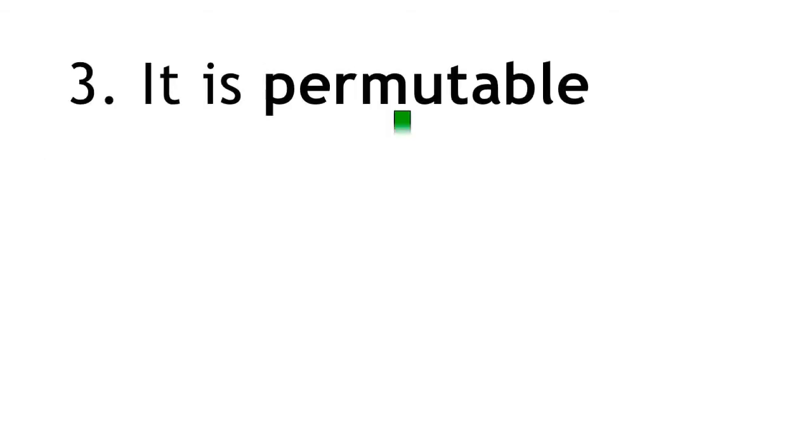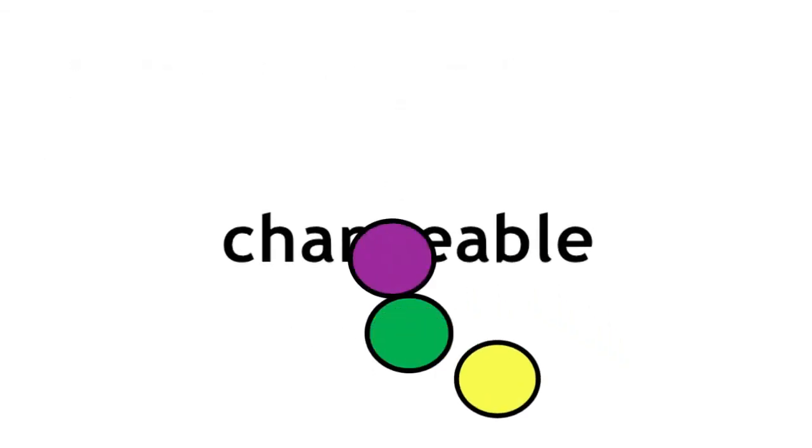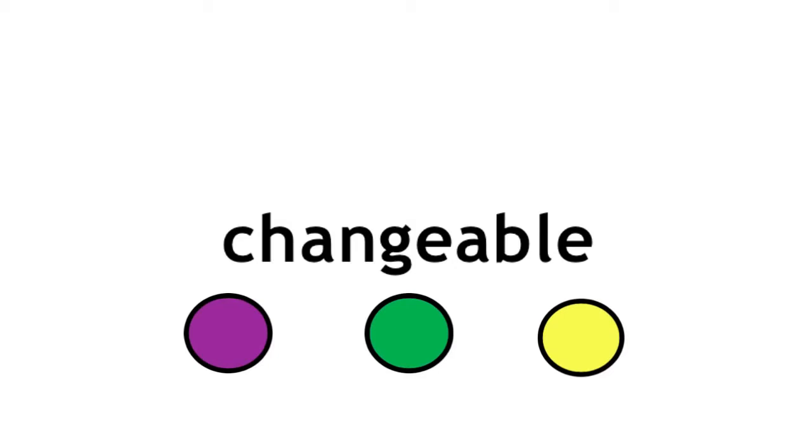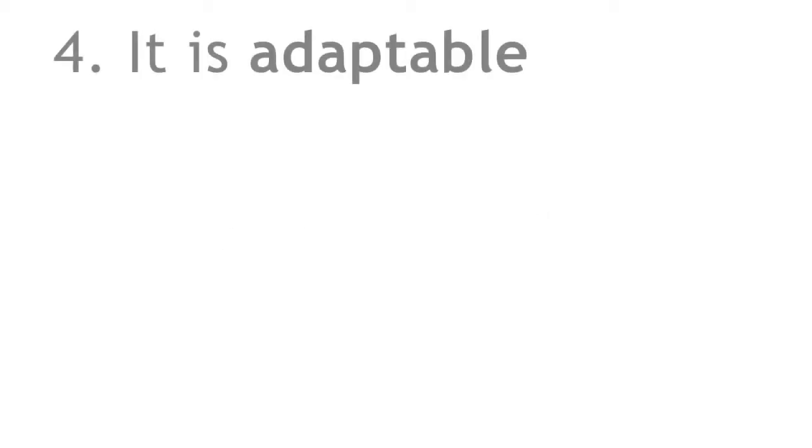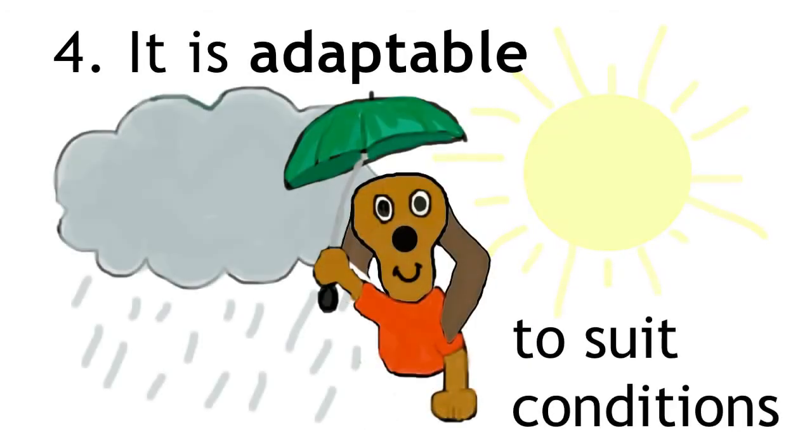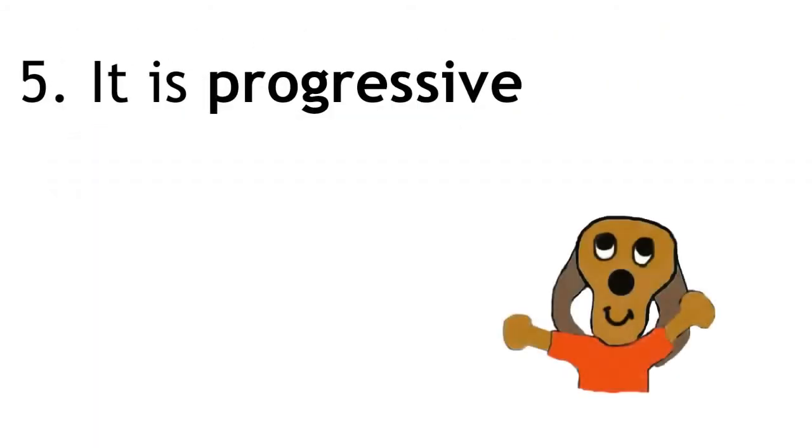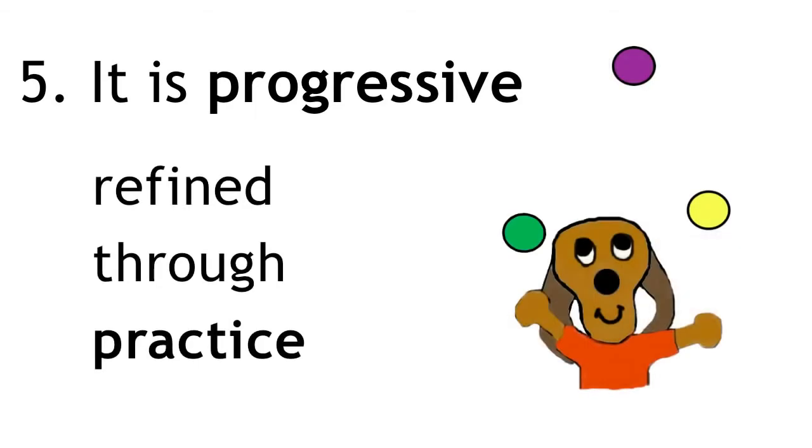Three, it is permutable. This means that the pattern or sequence may change, the order of things might swap around. Four, it is adaptable, so it can be changed to suit conditions. And five, it is progressive, so it can be performed and refined through practice.